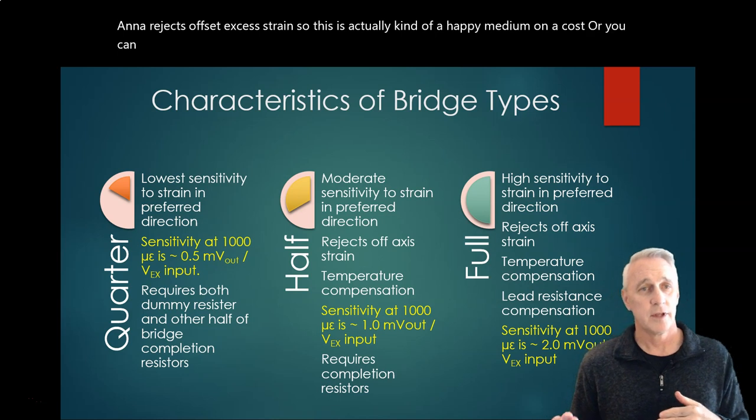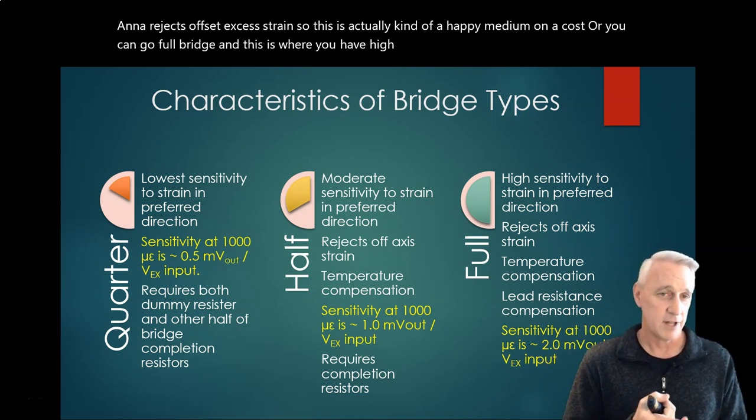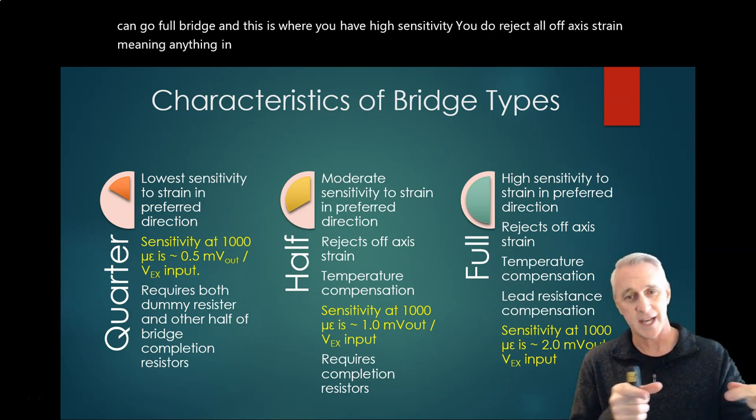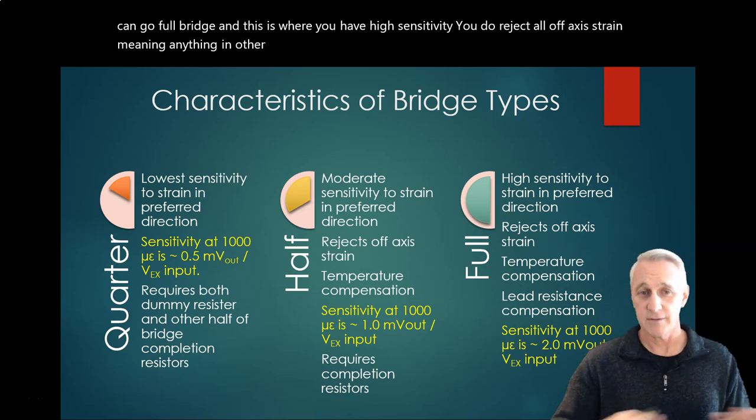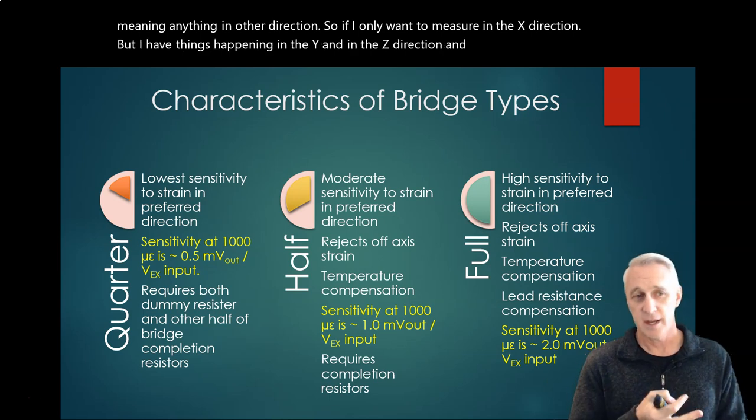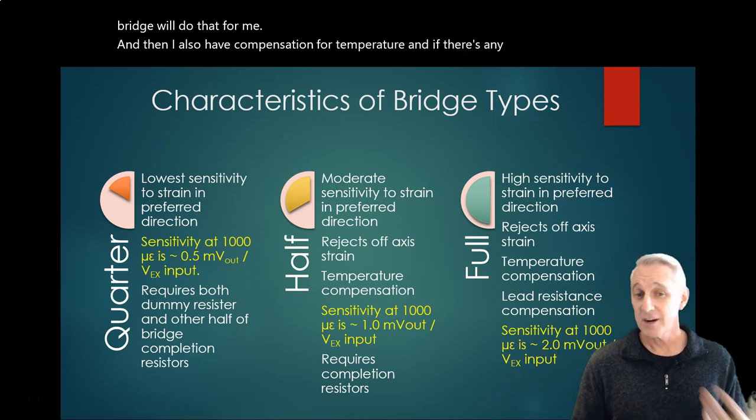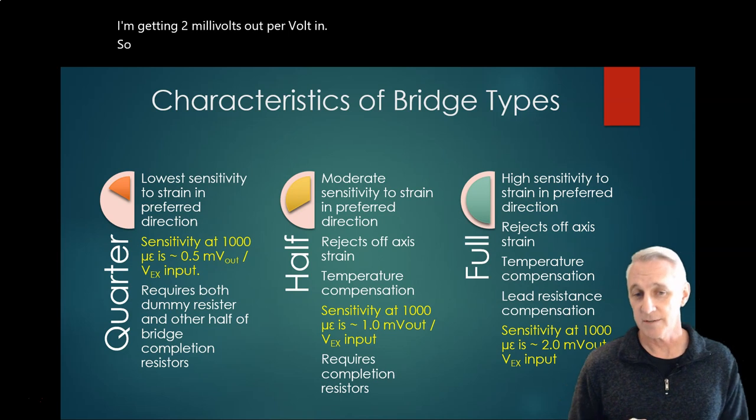Or you can go full bridge, and this is where you have high sensitivity. You do reject all off-axis strain - meaning anything in other directions. So if I only want to measure in the x direction, but I have things happening in the y and z direction, and I want those rejected, a full bridge will do that for me. And then I also have compensation for temperature and any lead resistance. Here I'm getting two millivolts out per volt in, so about 20% efficiency.